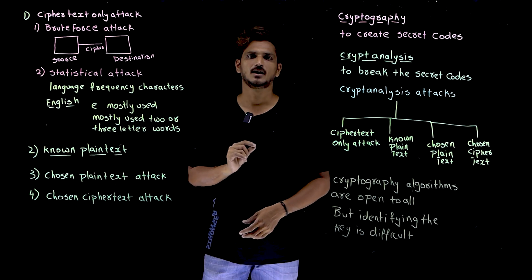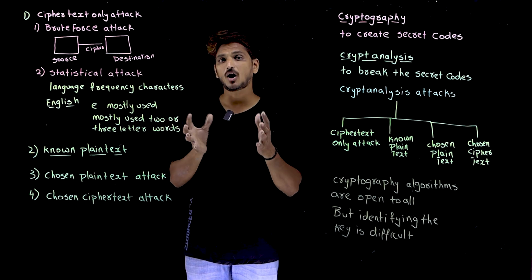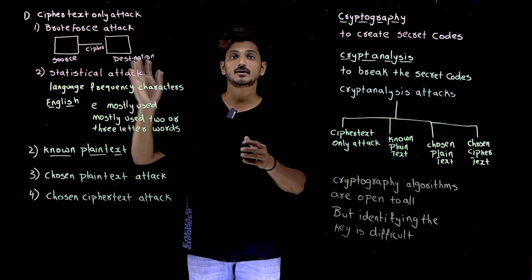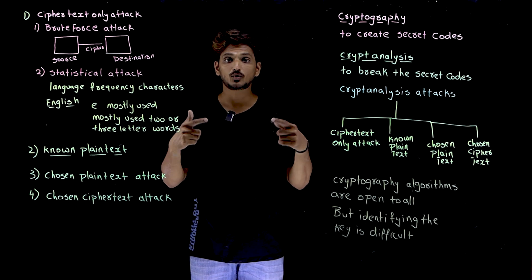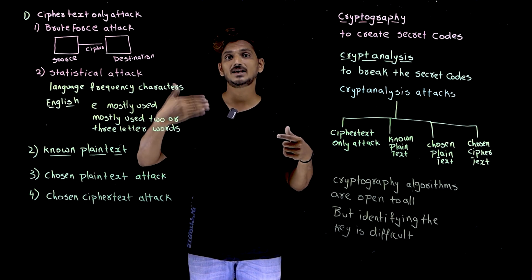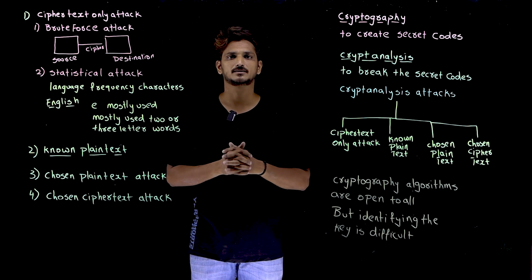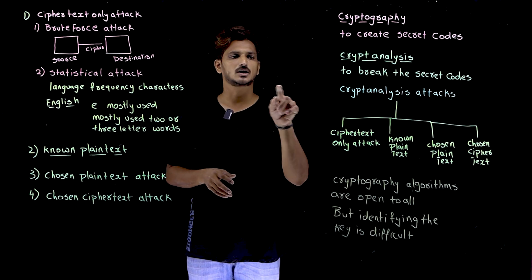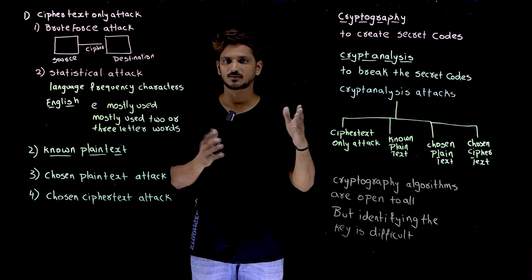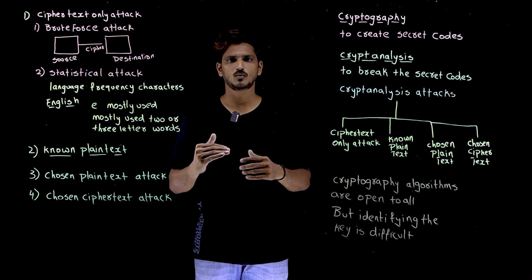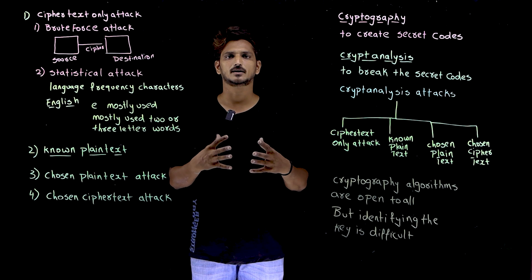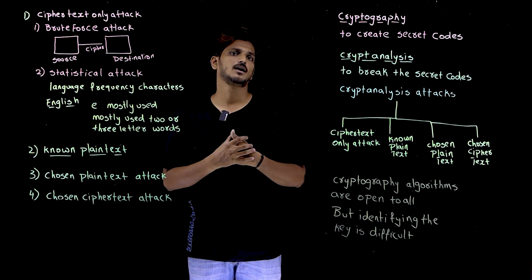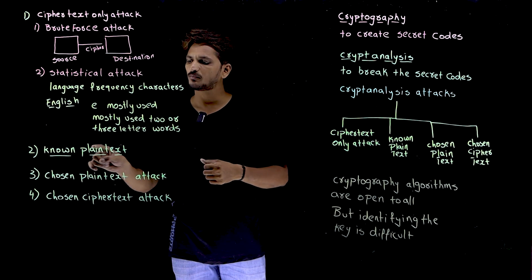The second type is known plaintext attack. Suppose you are a hacker and somehow you collected some plaintext and ciphertext pairs. Using those pairs, you try to analyze the logic and identify the key. For example, if you collected 10 to 20 pairs — like 'hello' is converted to some ciphertext — using these pairs, you try to identify the logic and find some way to identify the message. That is what known plaintext attack means.